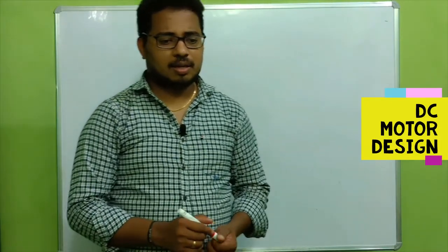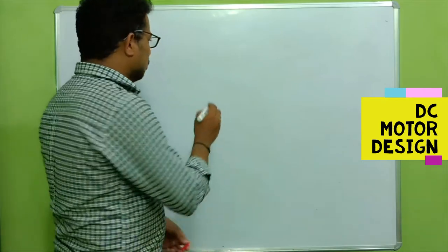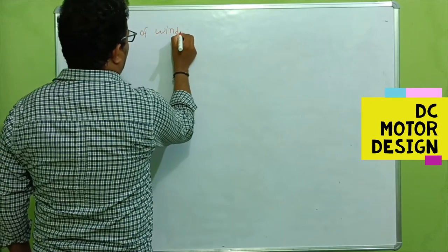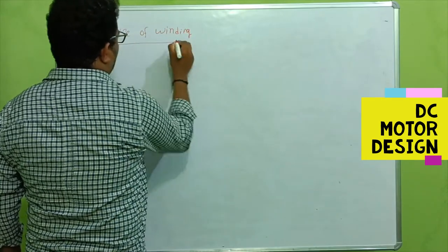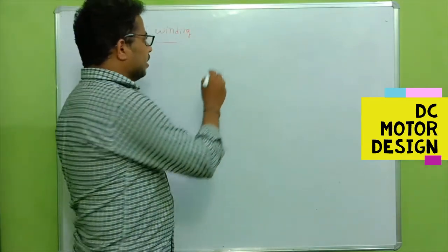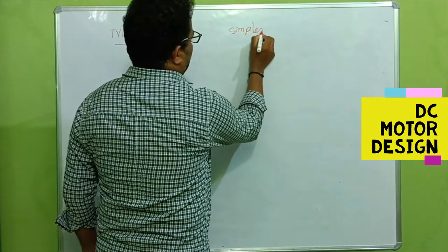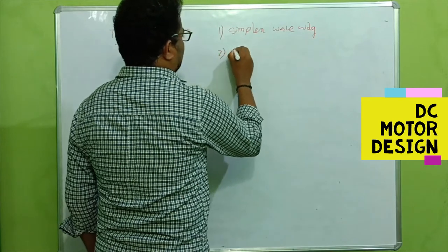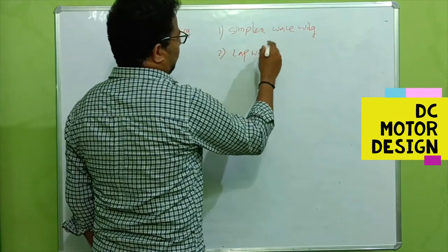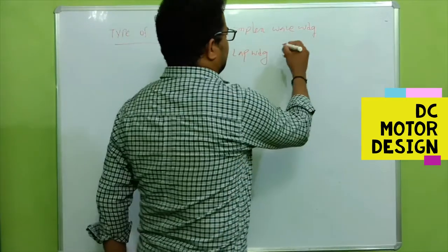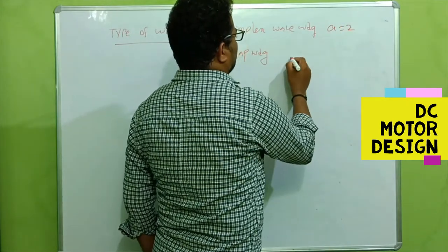In this video we are discussing the type of winding we should choose for this DC motor design. We have simplex wave winding and lap winding. For both of these, the main difference is the number of parallel paths. For wave winding, the number of parallel paths is two.